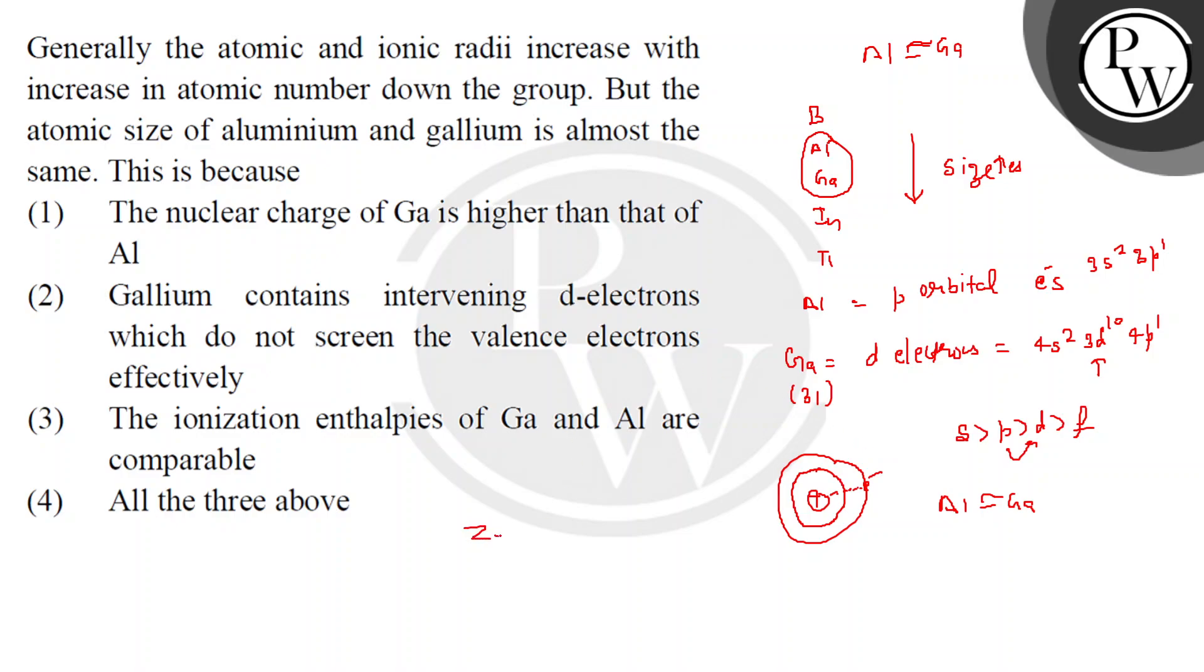That is Z effective equals Z minus sigma, where Z is number of protons and sigma is screening constant, which is number of inner electrons. So screening effect and overall Z effective is the nuclear charge.